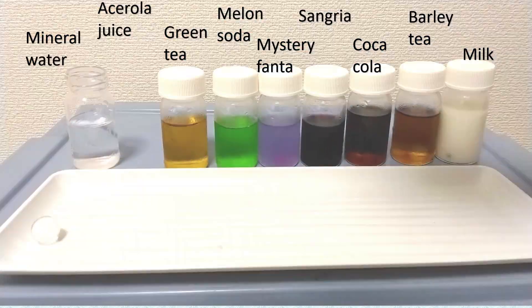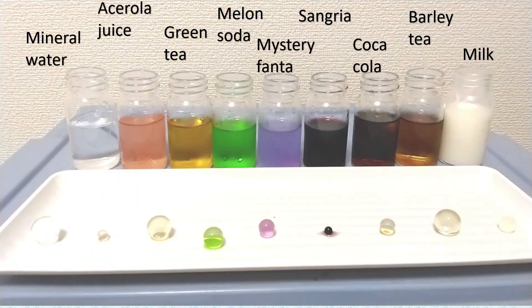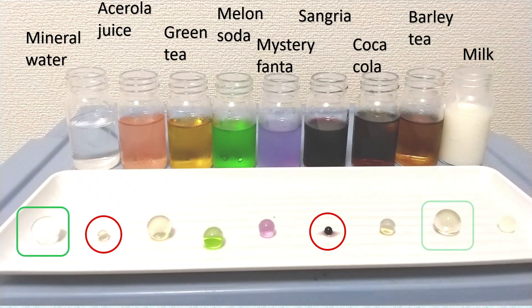Here are how the beads look like after soaking in the liquid after one day. Interestingly, the size of the beads are different depending on which liquid we put them into, with Sangria being the smallest, followed by acerola juice. The largest one are mineral water and tea.